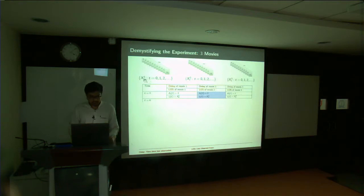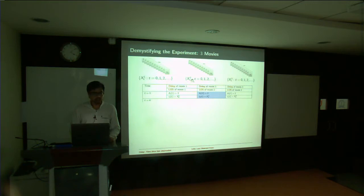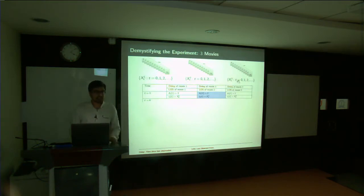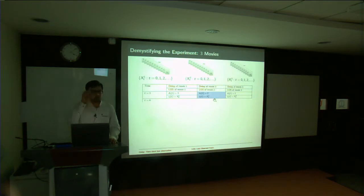The superscript denotes which location you are looking at — location 1 has superscript 1, location 2 has superscript 2, location 3 has superscript 3. Let's stick to three movies for now. So let's say you looked at movie 1 at the first time instant, movie 2 at the second, movie 3 at the third.